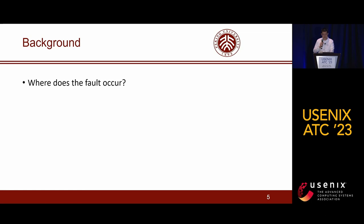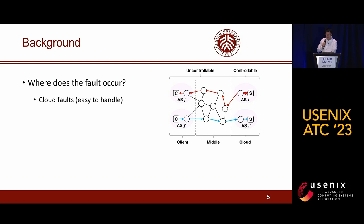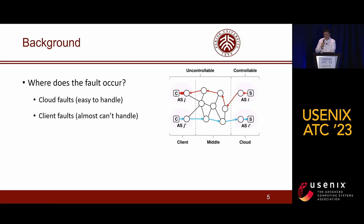The second question is: where does the fault occur? From the perspective of CSPs, network faults can be classified into three categories based on where they occur. The first kind is cloud faults that occur in the cloud AS. Since the cloud network is fully controlled, cloud faults are easiest to detect and comment on. The second kind is client faults that occur in the client AS. Since client faults occur on the single path between the cloud and the client, they are often considered unmanageable, and CSP can only request assistance from the corresponding ISP for fault resolution.